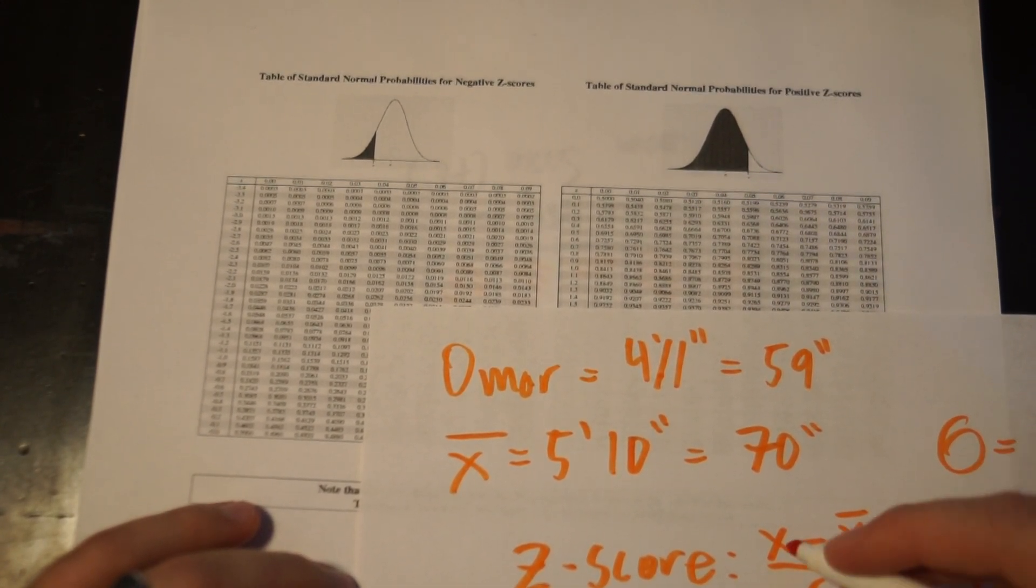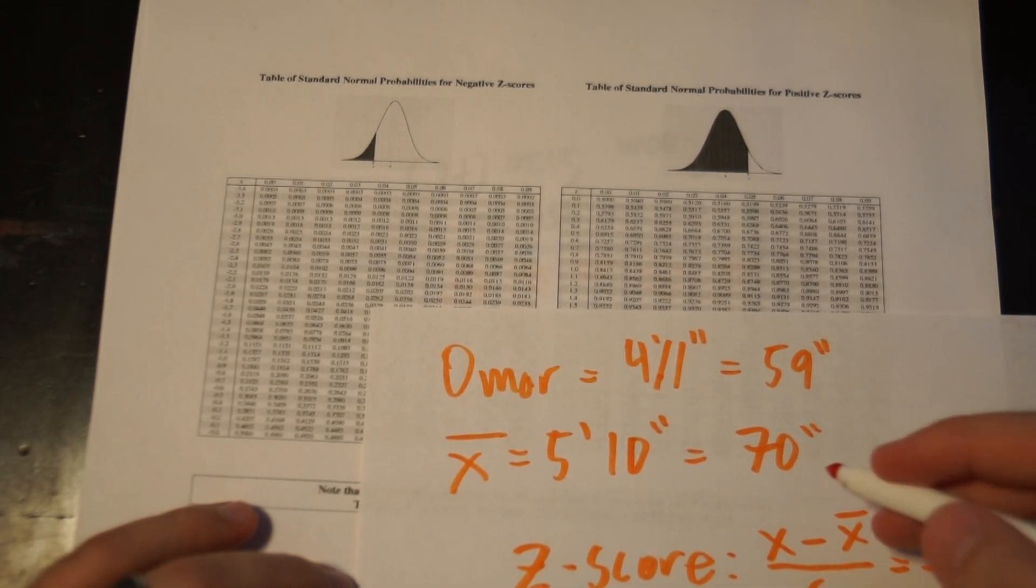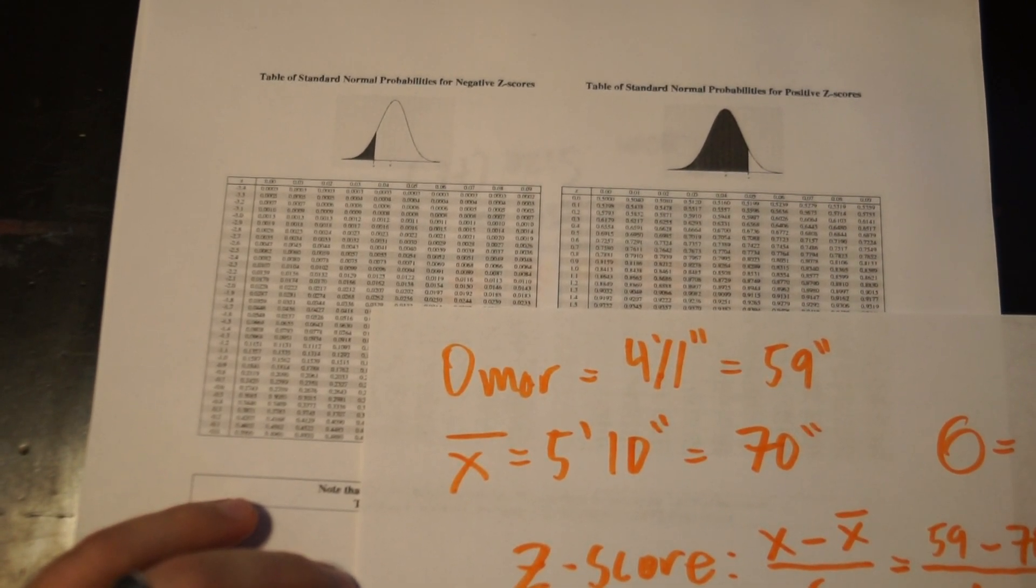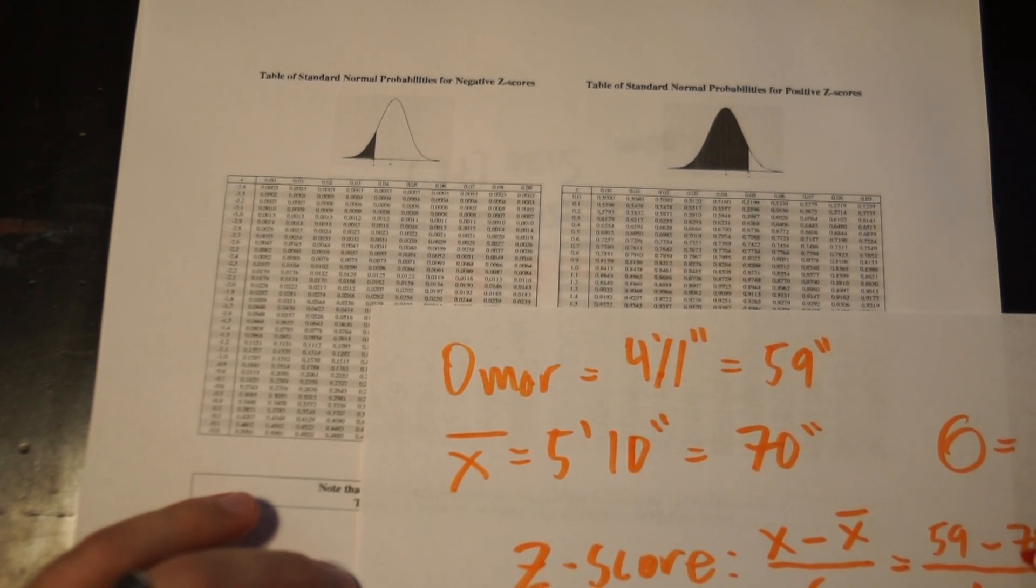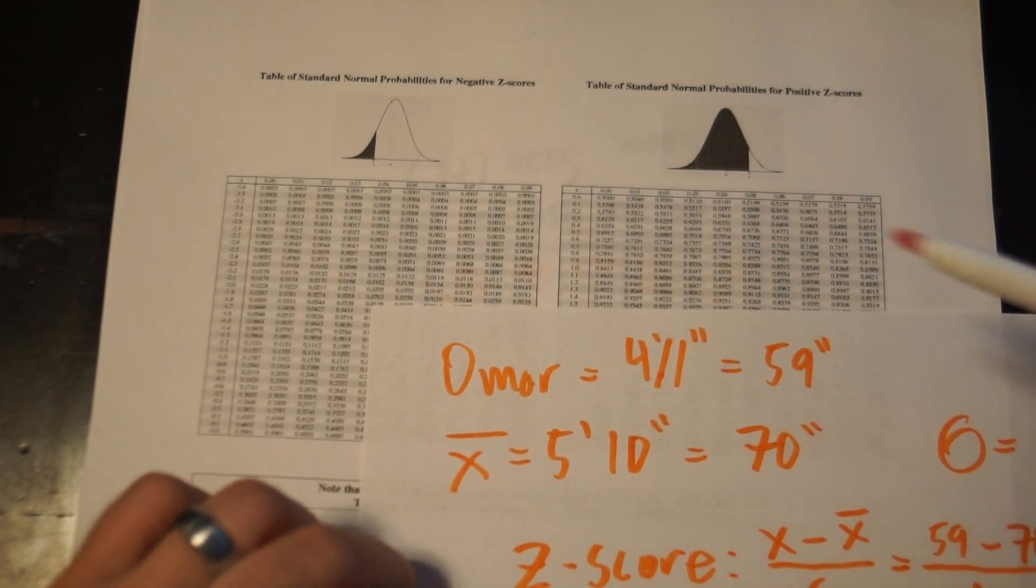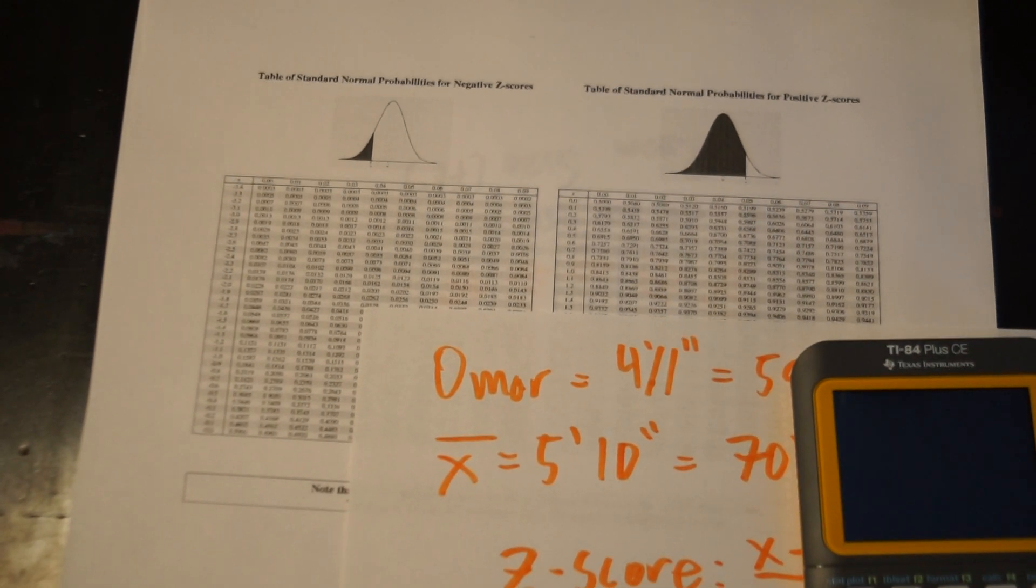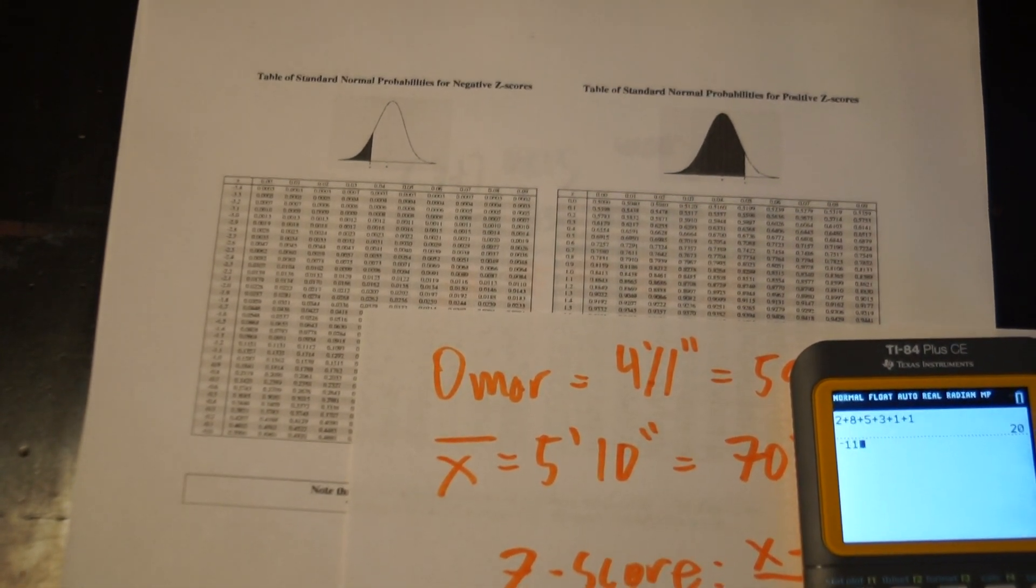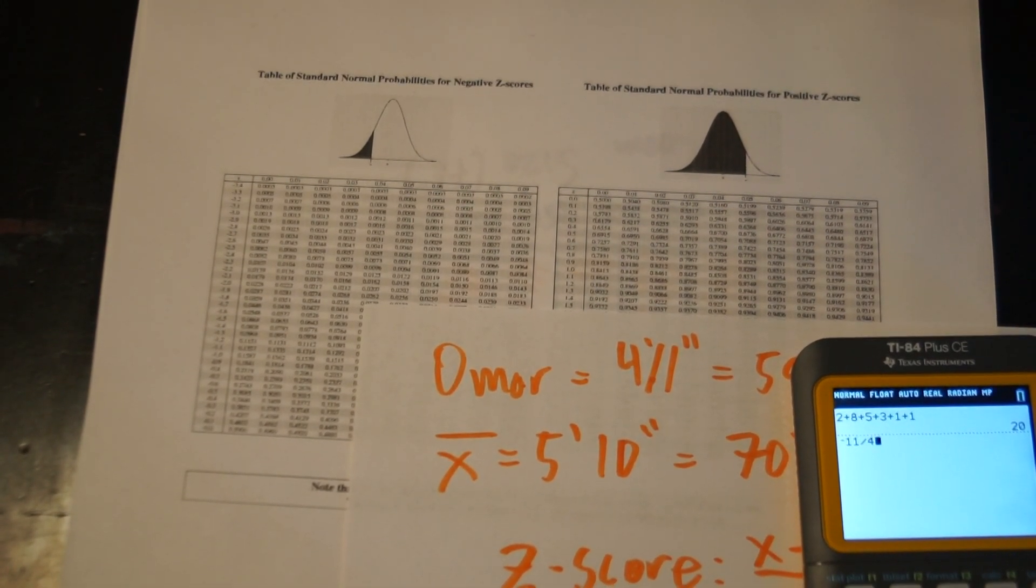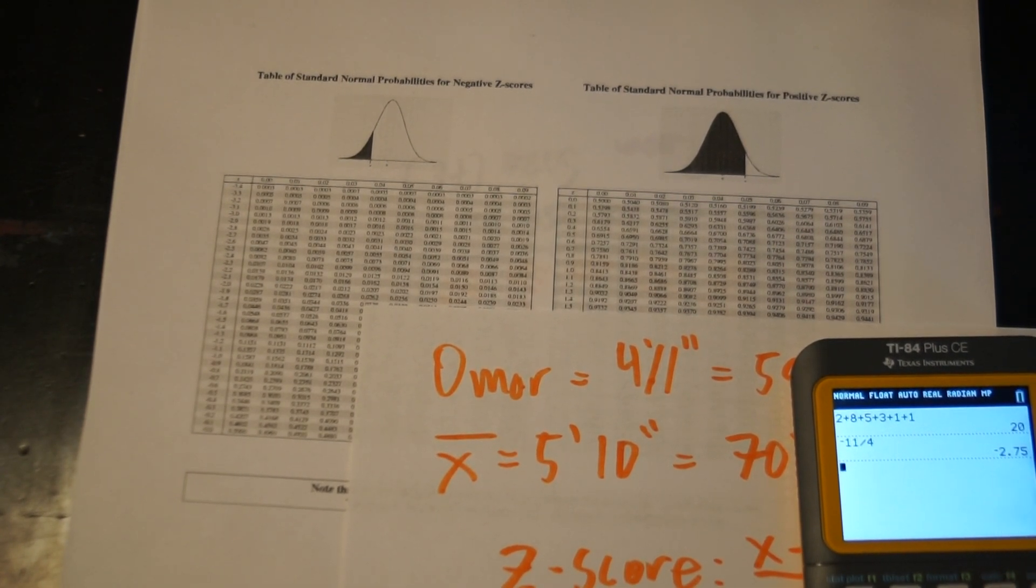And we're going to have our value of 59 minus 70 equals, well, what is that? That's negative 11 over 4. But if you look at my z-score table, that's in decimals. So I'm going to go ahead and convert that to decimals really quick. Negative 11 divided by 4, negative 2.75.